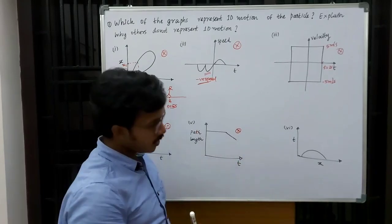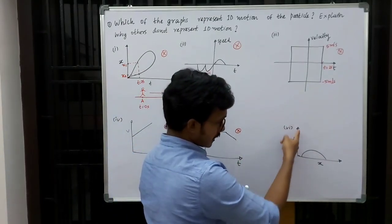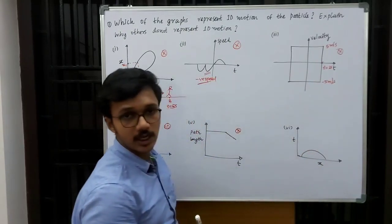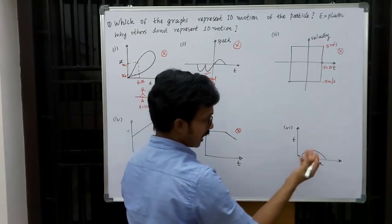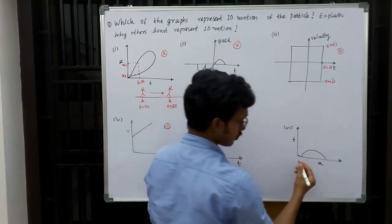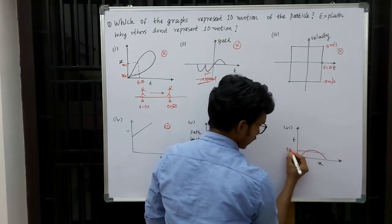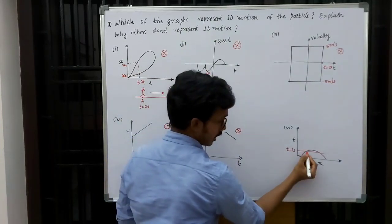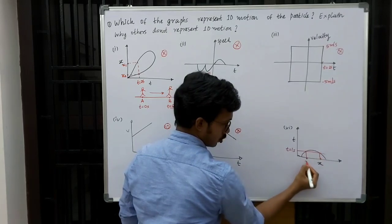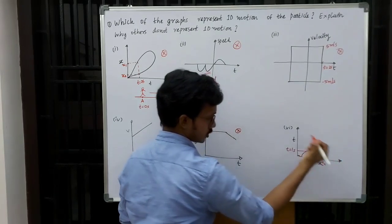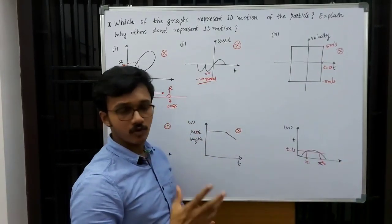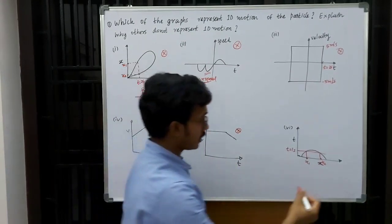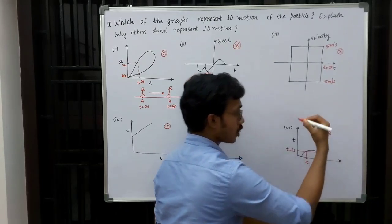Moving on to the next graph. Here we are given with time along the y-axis and position along the x-axis. So it is again an x-t graph. Like we explained the first question, let me assume time t equals 1 second. The particle is shown having two positions, x1 and x2. But it is not possible for a particle to have two positions at a given instant of time. So this graph is also not possible.